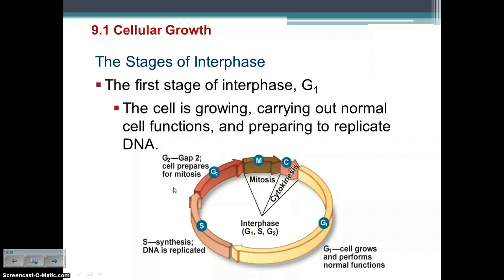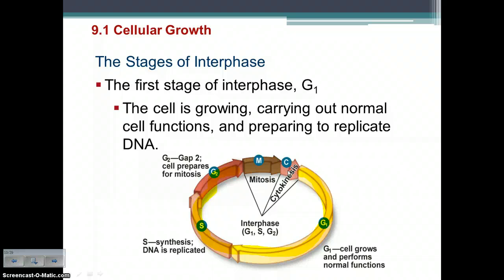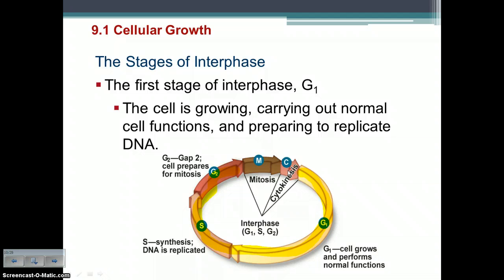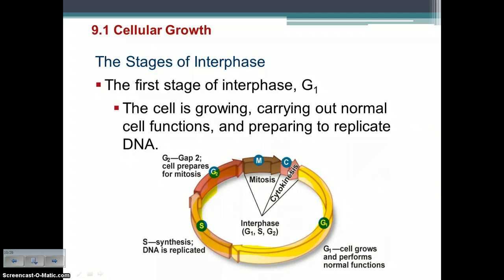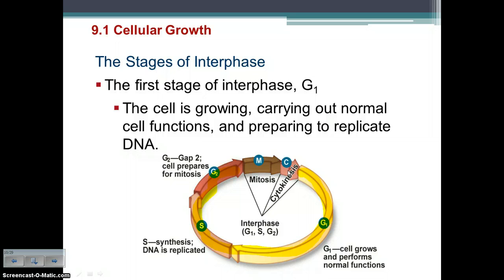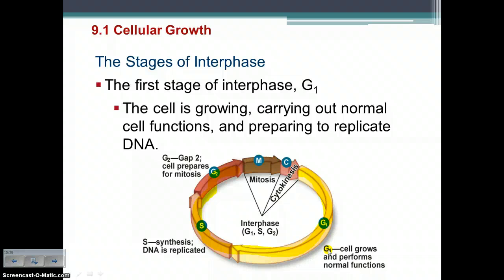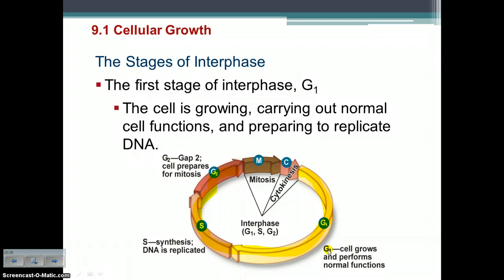Interphase actually has three parts. The cell spends the majority of its time in interphase, just carrying out normal cell functions, growing, replicating DNA, and preparing for mitosis. The first stage is G1, the growth stage, where the cell is growing and performing normal cell functions — letting in nutrients and letting out waste.